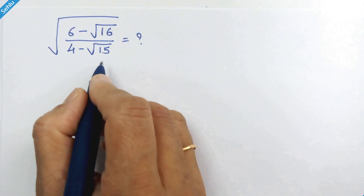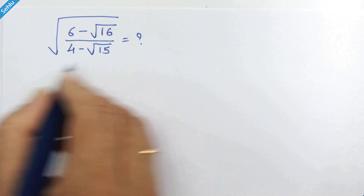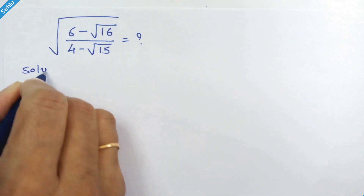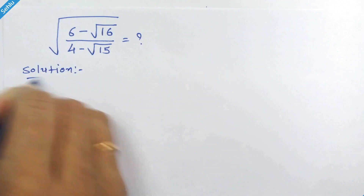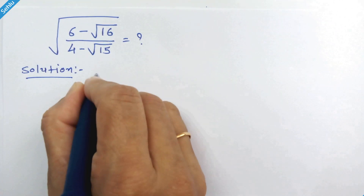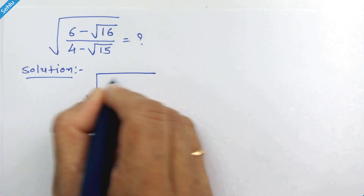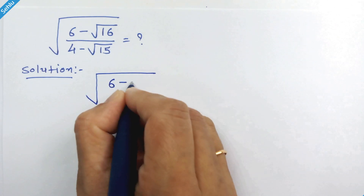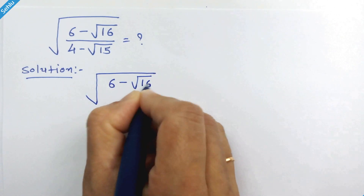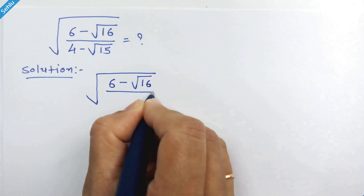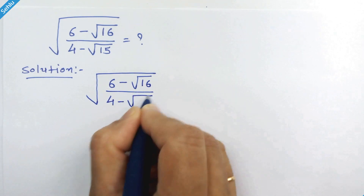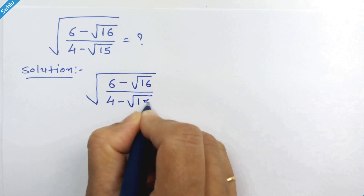Hello friends, let's simplify this question. Our question is square root of 6 minus square root of 16, upon 4 minus square root of 15.